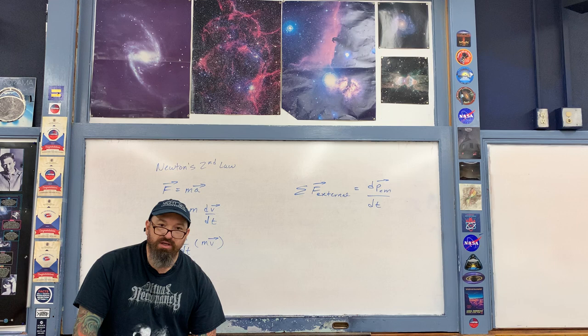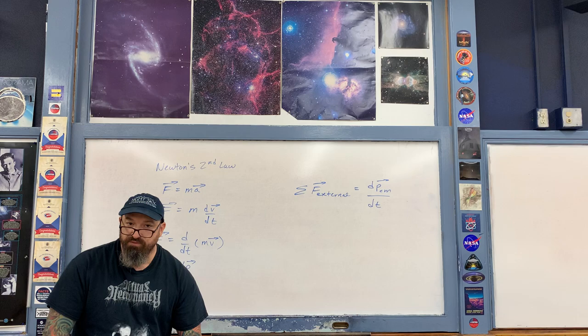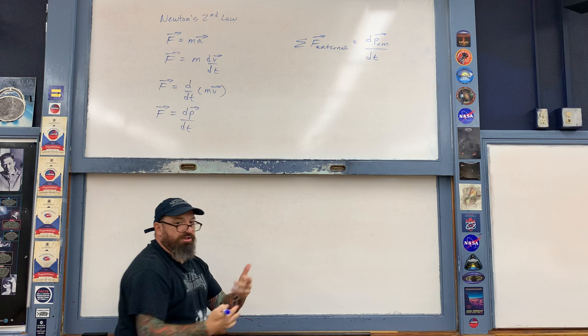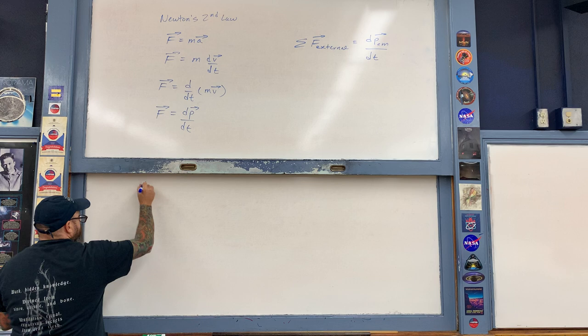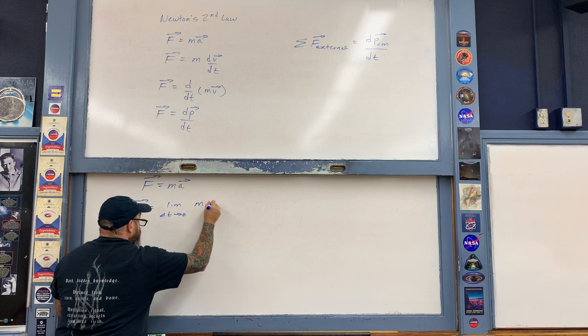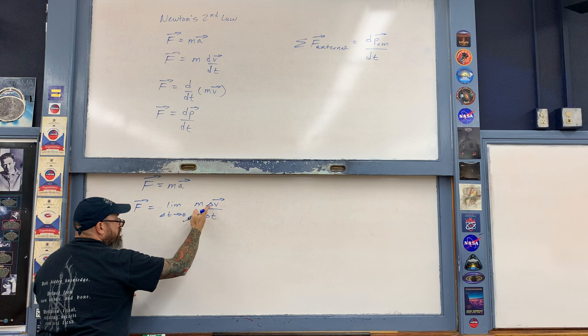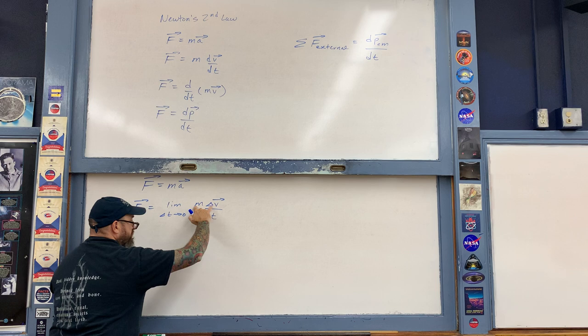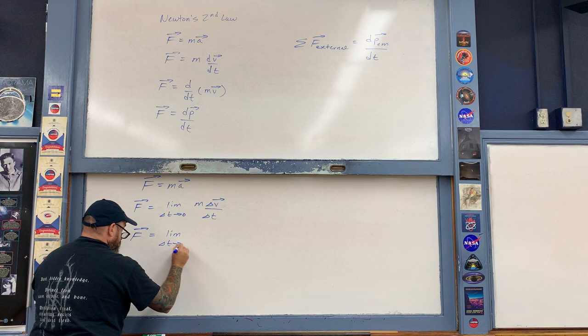Here's how to show this algebraically using limit notation for those enrolled in Physics AB. Start with F = ma, then write acceleration as the limit as time approaches zero of change in velocity over time. Placing mass m in the numerator, we can see the change in momentum of the system with respect to time.